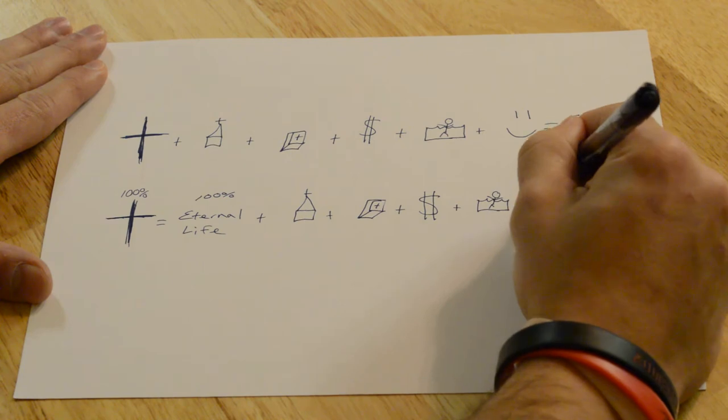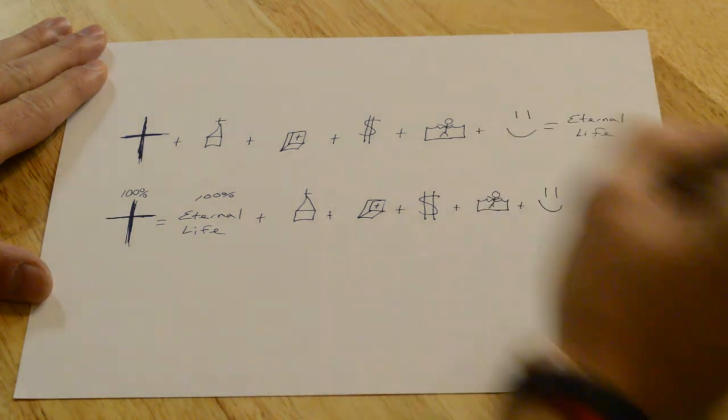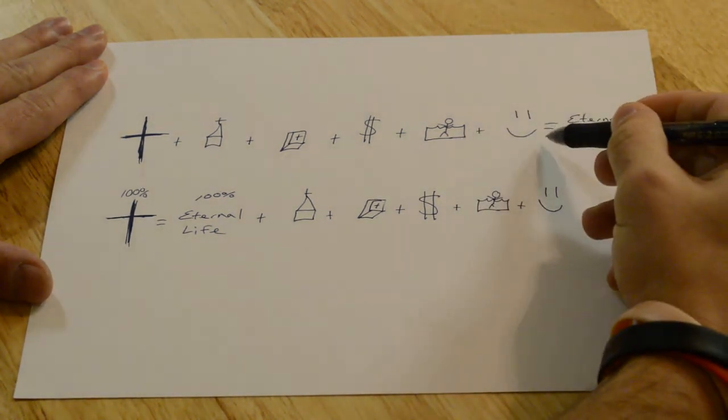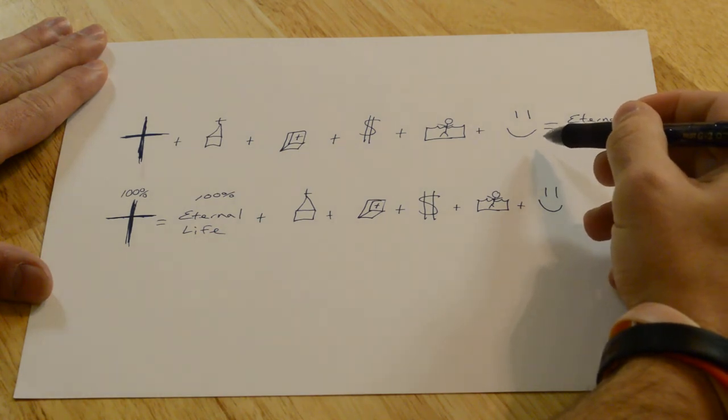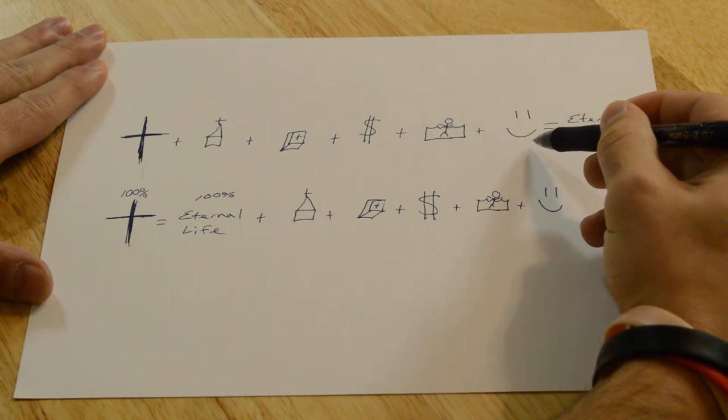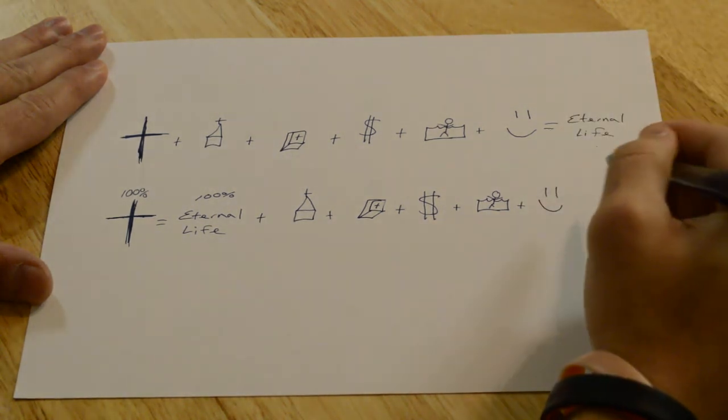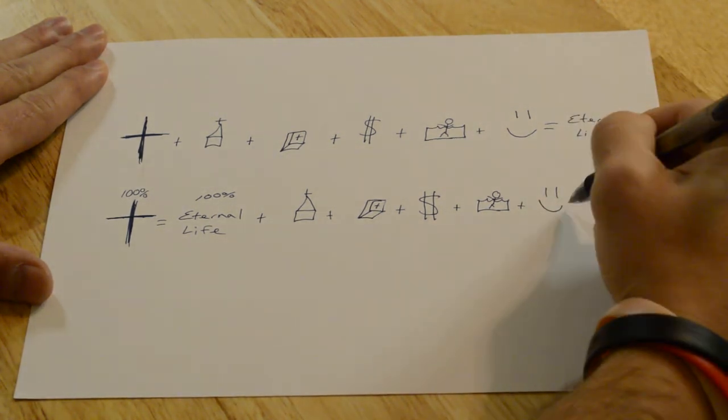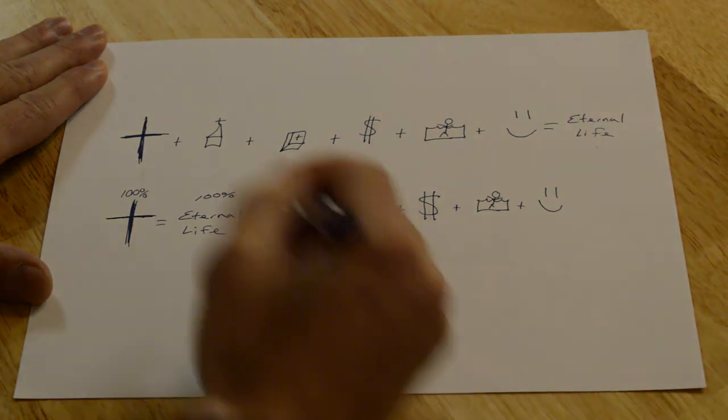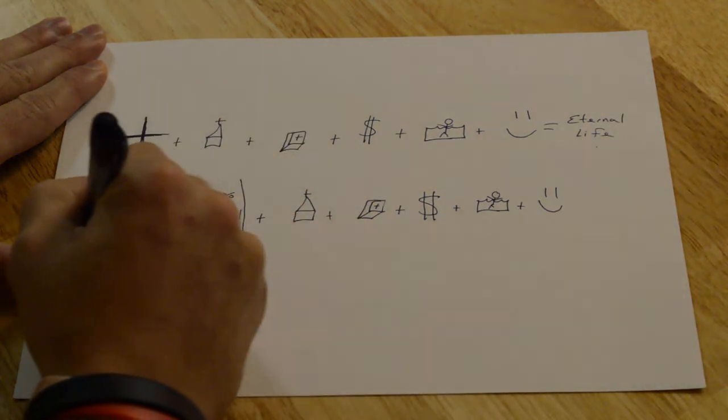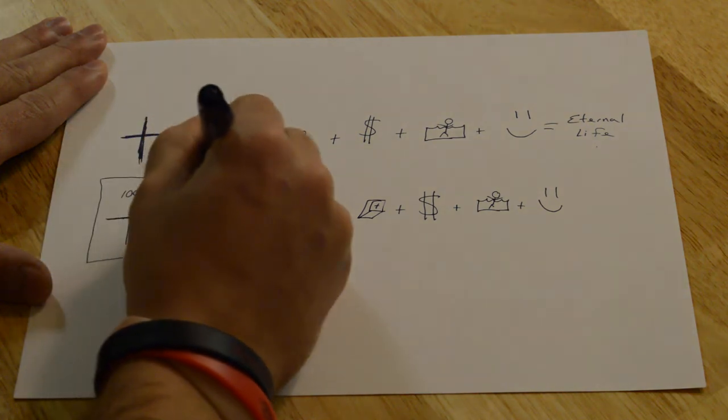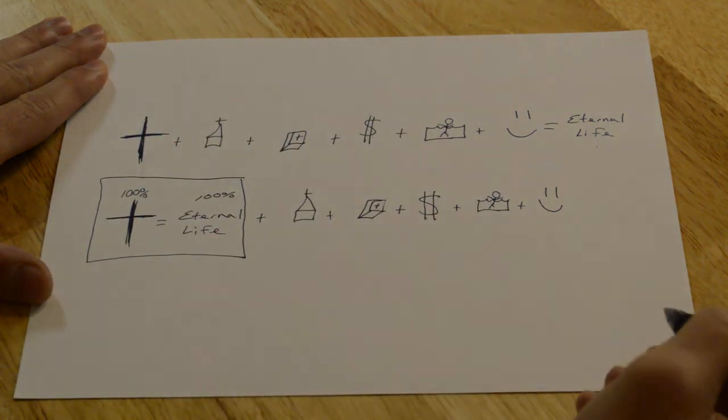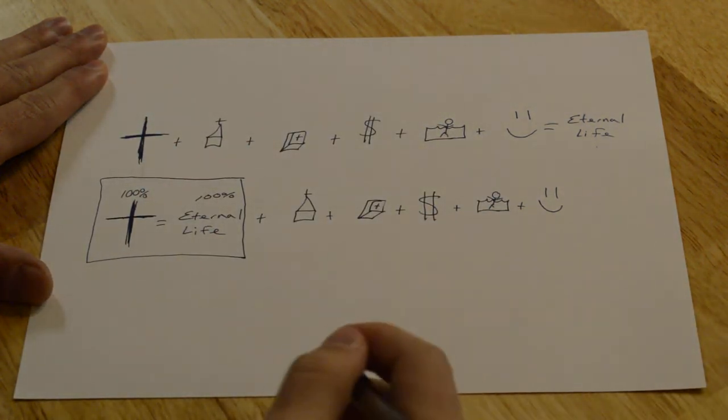And then we always tell people there's two differences between these two smiley faces. This one's happiness determined by my circumstances. Things are going great, I'm a lot of fun to be around. Things aren't going great, you probably best just leave me alone. And this one's joy. And joy never changes. Because joy comes from knowing that you have a God who loves you for you and not anything you've done or will do. But he's done everything on your behalf.